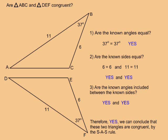In this example, are triangle ABC and triangle DEF congruent? Question 1: are the known angles equal? Both triangles have a 37 degree angle. Yes, the known angles are equal.